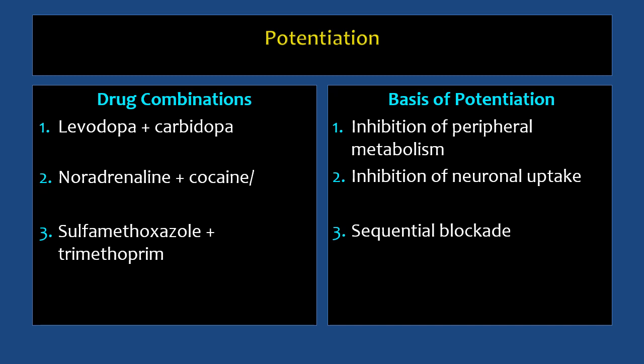Examples of potentiation: levodopa and carbidopa. Levodopa is useful in parkinsonism, while carbidopa has no anti-parkinsonian effects by itself. However, carbidopa inhibits the peripheral metabolism of levodopa, so less levodopa is metabolized in the periphery and more becomes available to cross the blood-brain barrier, enter the brain, and produce anti-parkinsonian effects.